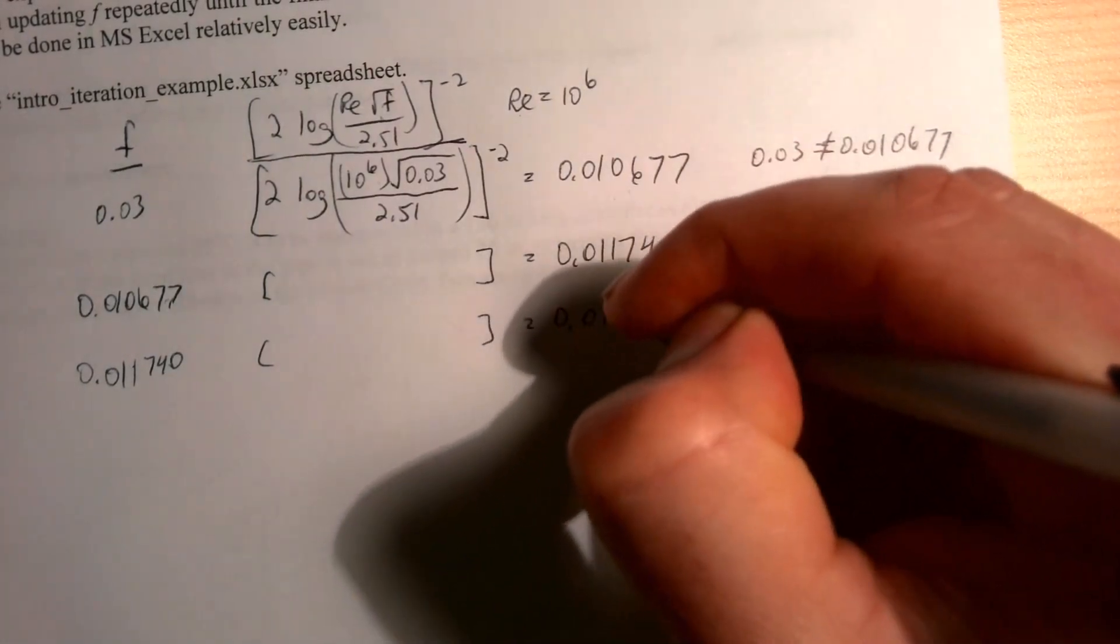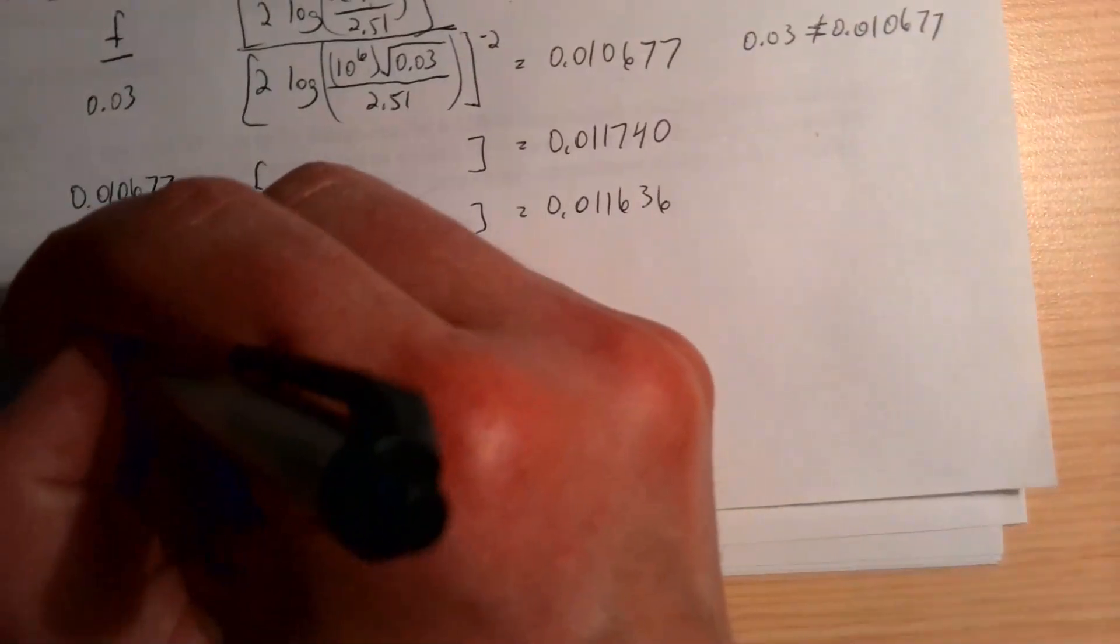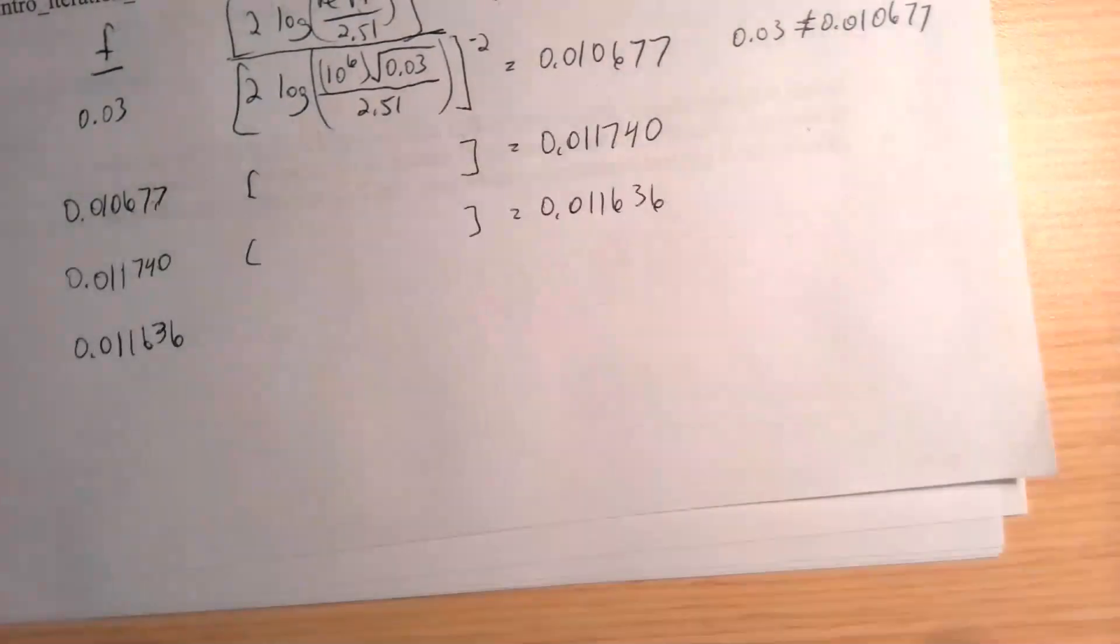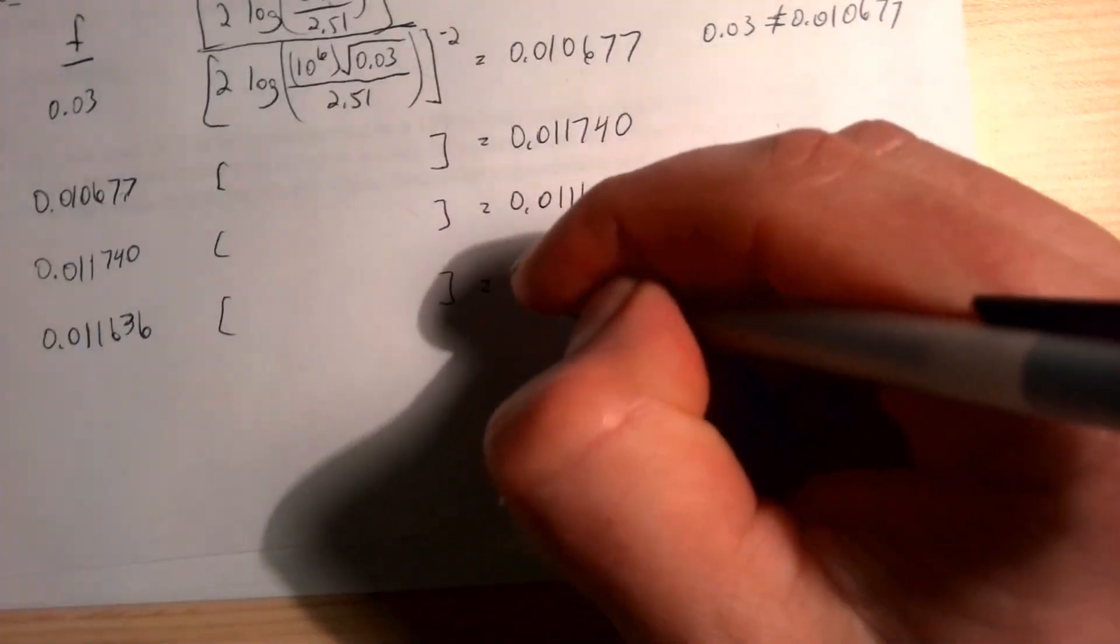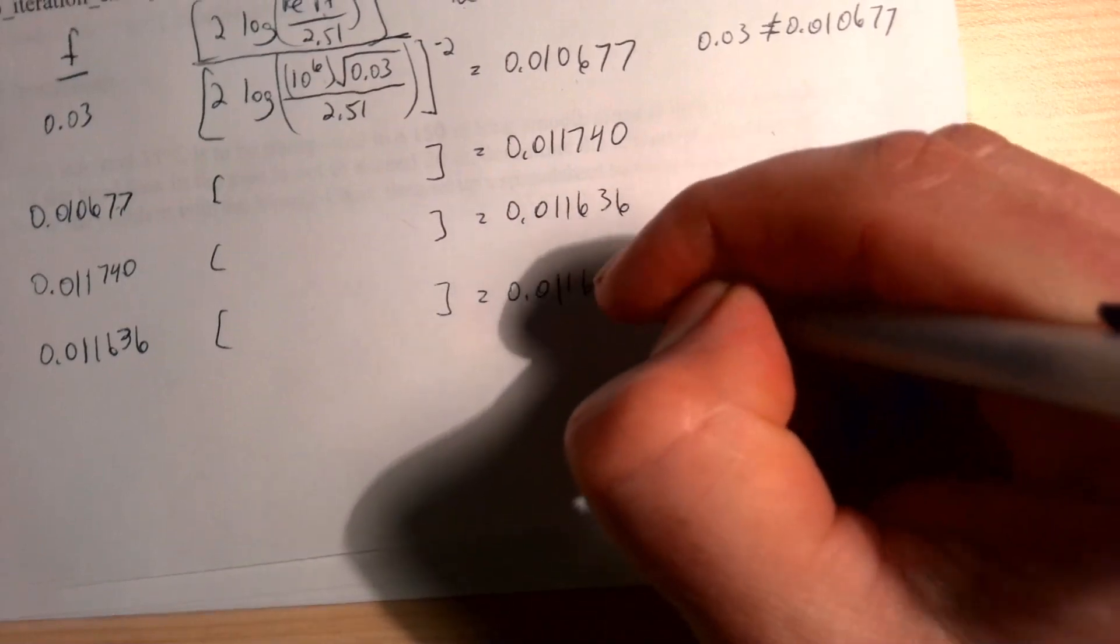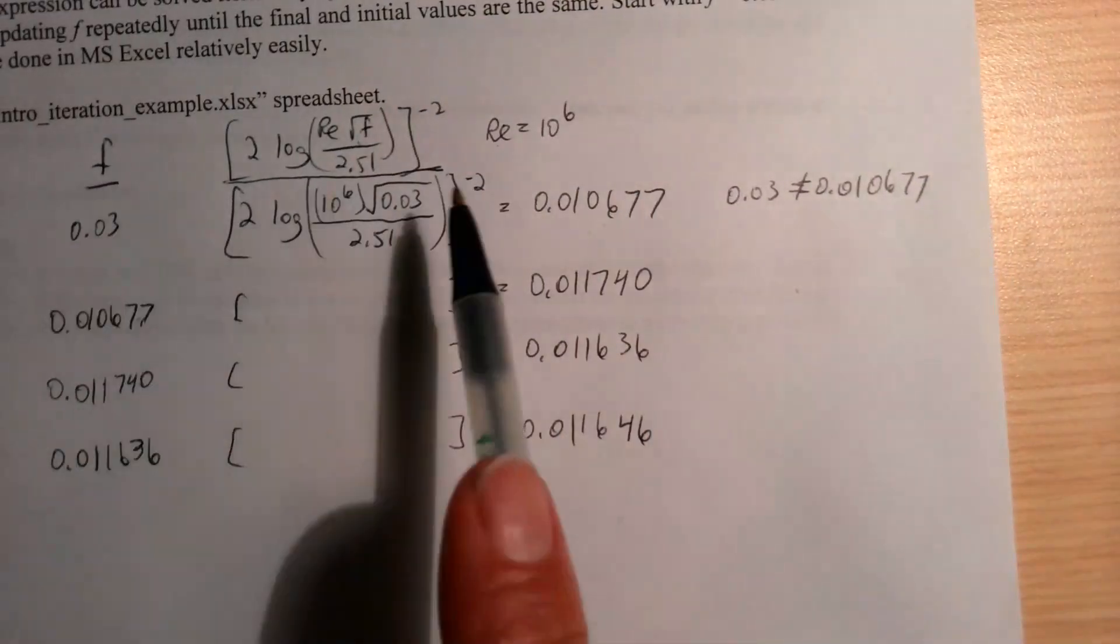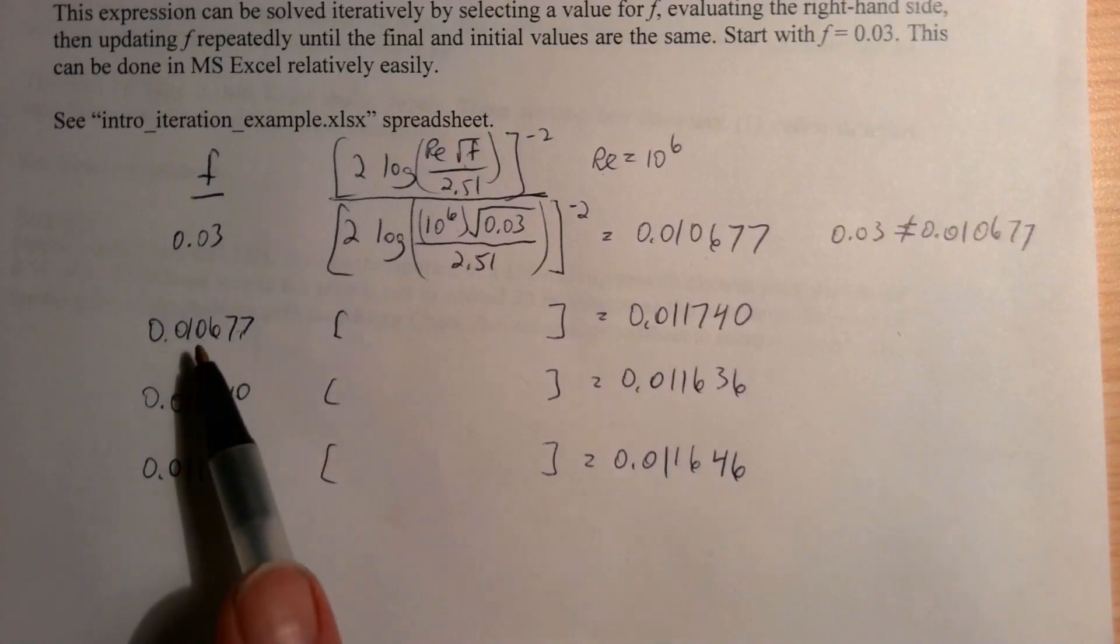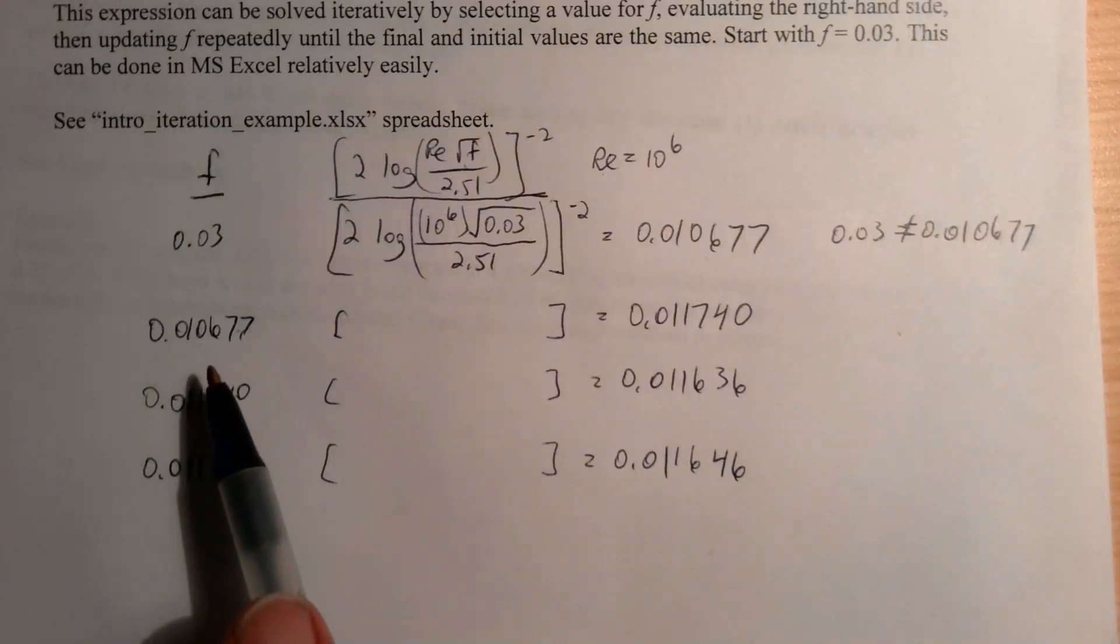So 0.011740, and then here we do this calculation again and we get 0.011636. Then if we use that one, 0.011636, then our right-hand side becomes 0.011646.